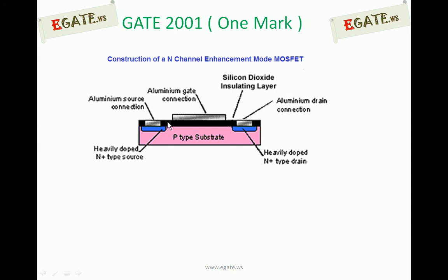Above this, there is a silicon dioxide layer which acts as an insulator, and above that it is the gate. Previously, gate was made up of aluminum, but because of its disadvantages — it has a low melting point so it cannot be used at higher temperatures — aluminum has been replaced with polysilicon. Nowadays gate is made up of polysilicon, and gate, drain, and source are going to be contacted with the help of metal, that is aluminum.